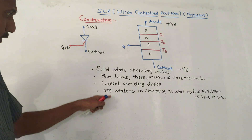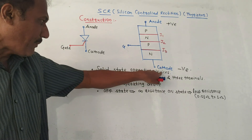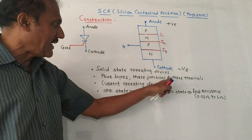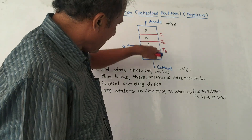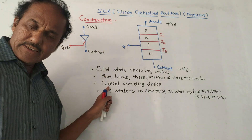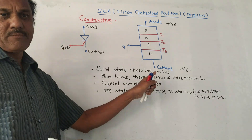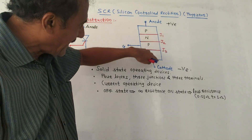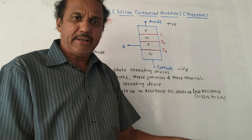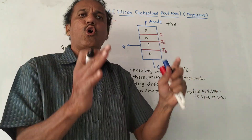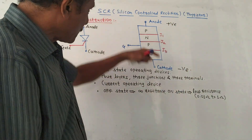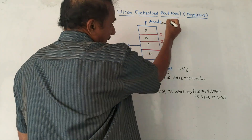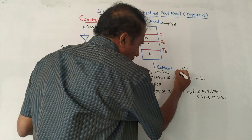Some important points: it is basically a solid-state operating device. It has four layers and three junctions — J1, J2, and J3 — and three terminals: anode, cathode, and gate. It is basically a current-operating device. Whenever the anode terminal is connected to the positive terminal of a battery and cathode to the negative terminal, the SCR is said to be forward biased, and current flows from anode to cathode.